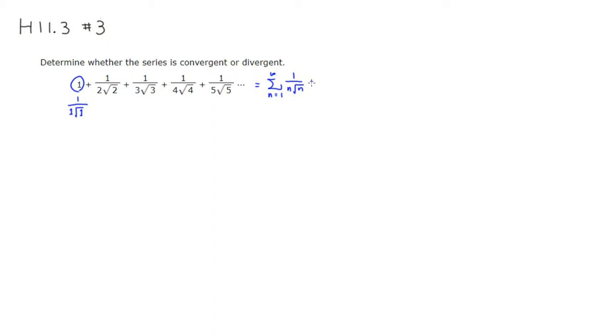But this is actually a p-series because we can rewrite it as n goes from 1 to infinity: 1 over n times square root of n is 1 plus 1 half, so n to the 3 halves power.